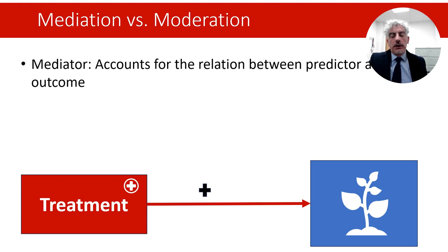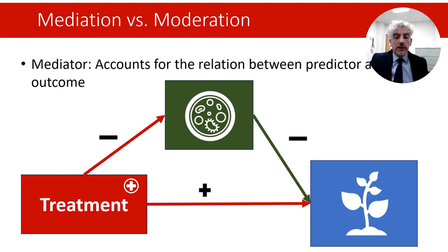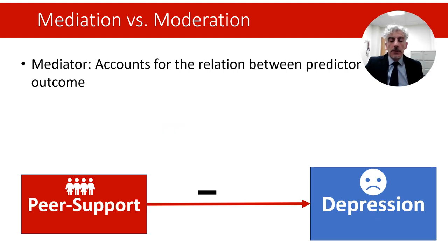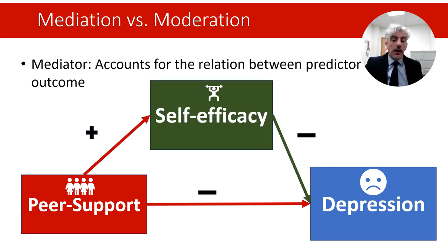For example, the predictor may be a treatment that we apply on outer rain to ensure that our plants grow. But the mediator may be the presence of fungi and other organisms in the terrain, which prevent growth of our plants. So the treatment works by removing fungi and thus removing factors that hinder the growth of our plants. Another example may be a peer support program that may reduce symptoms of major depression. But this program acts by increasing self-efficacy — the belief that someone has in their own ability to tackle issues — which in turn may reduce symptoms of depression.